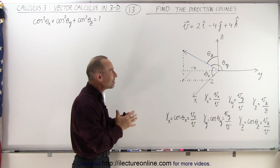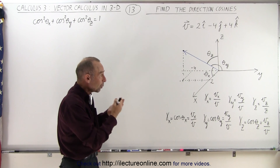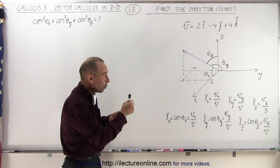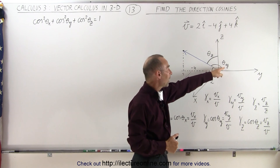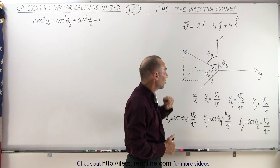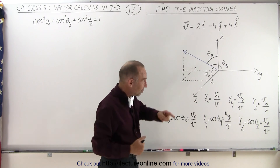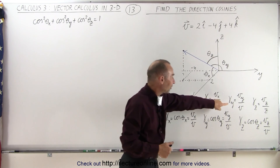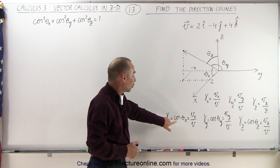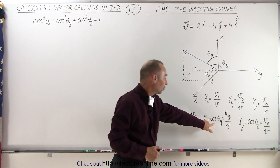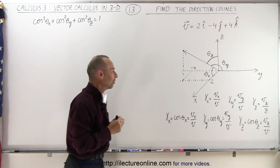To find the direction cosines, we have to understand what they are. Essentially, the direction cosine is the cosine of theta sub x, the cosine of theta sub y, and the cosine of theta sub z. We have the notation alpha sub x, alpha sub y, alpha sub z for the direction cosines, which can also be defined as the cosine of the angle between the vector and the x, y, and z axes.